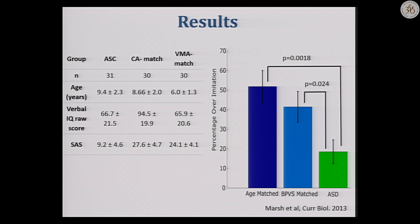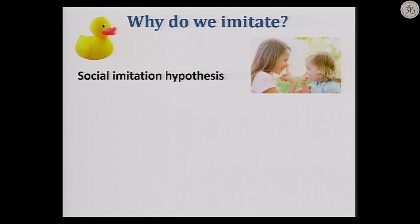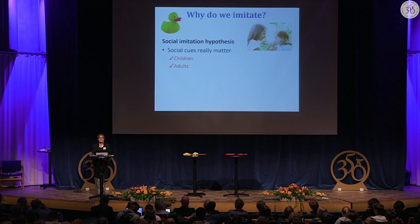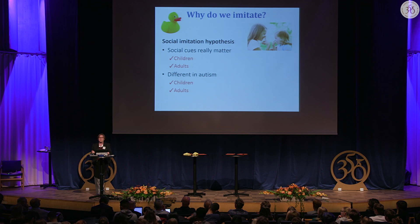You shouldn't believe it when I show you just one video — here's the data. Thirty kids with autism, 30 controls matched for chronological age, and 30 matched for verbal mental age show a very large difference in the level of over-imitation behavior in the autistic sample. Coming back to my hypothesis about why we imitate, we predicted effects of gaze and found that true in both children and adults. Social cues and eye contact really do make a difference to imitation behavior, and we predicted differences in autism and see that on both tasks.